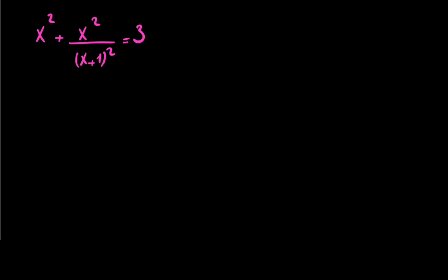Welcome to Math with Marker. Today I'm going to solve a really nice Math Olympiad question from the Canadian Math Olympiad. So let's talk about this — if we have x squared plus x squared divided by x plus 1 squared equal to 3, let's talk about finding x in this equation.